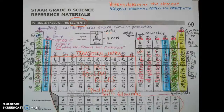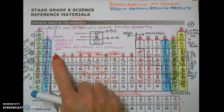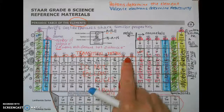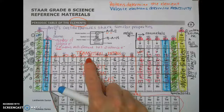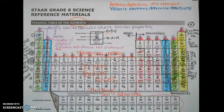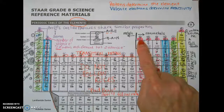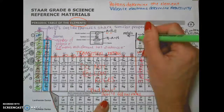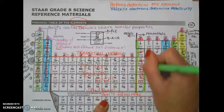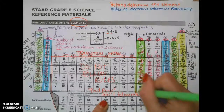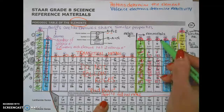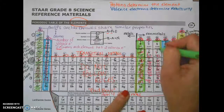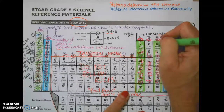Moving on — remember, group 3 through group 12 are transition metals, so these don't follow the bonding rules. These are the Bs, or the bad boys — they don't follow the rules. So we're going to move right on over to group 13, which is 3A with three valence electrons. Group 13 has three valence electrons and wants to bond or react with another group to form 8. If you guessed group 15 with five valence electrons, you're absolutely right — they are going to want to bond as well.